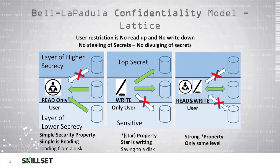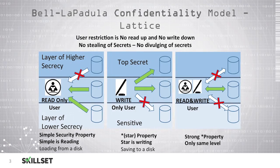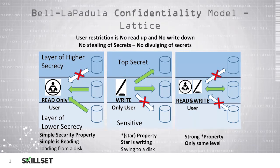In the middle example, you have a user who is permitted to write data to the top-secret level and to the secret level, but they're prohibited from writing data to the lower level because that could allow sensitive data to be released to individuals without clearance. And in the third example, to the right, we see that this user is permitted to read and write at their level only, but they don't have access to read or write from higher levels or lower levels. We refer to this as the strong star property when the user is only permitted to read and write to their exact same level of clearance.